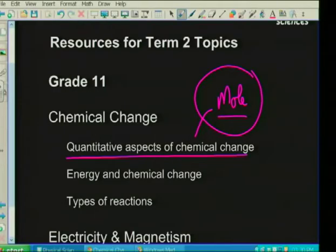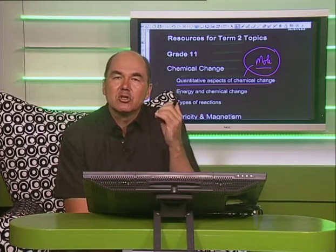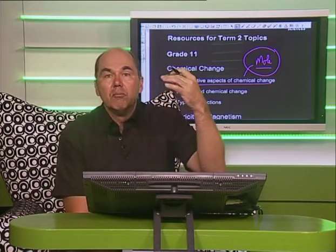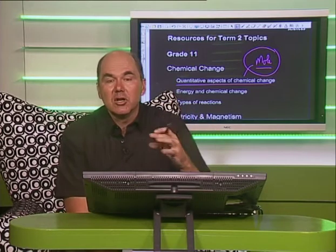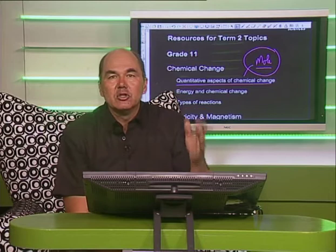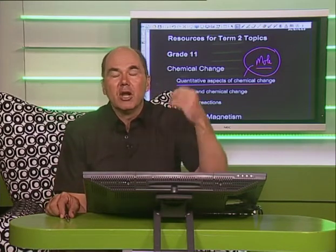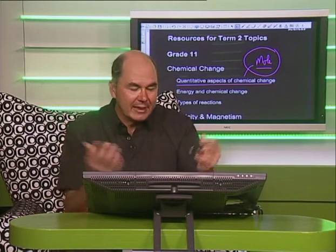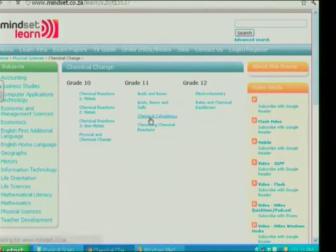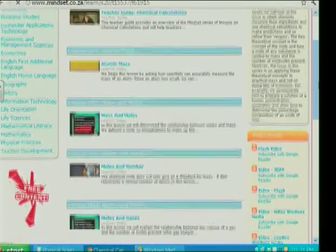I'd really encourage you to take time to make sure your learners have the concept of the mole well bedded down without too many misconceptions. They need to understand the different aspects: converting from the mass of one mole of a substance, the number of particles — whether atoms, molecules, electrons, protons, or neutrons — and the related volume. They should be able to manipulate those using formula or ratio, apply them to equations, calculate empirical and molecular formula. There are Mindset video series for this — on the website under chemical change there's a series called Chemical Calculations.